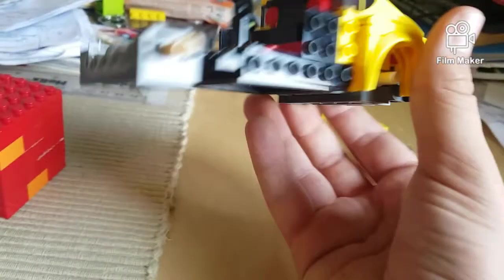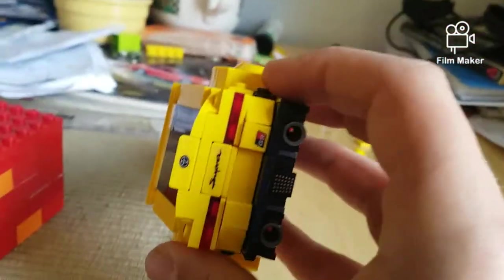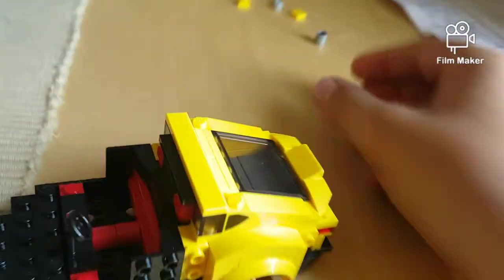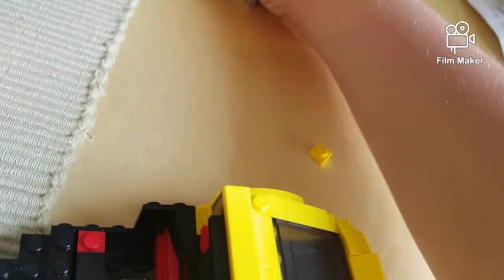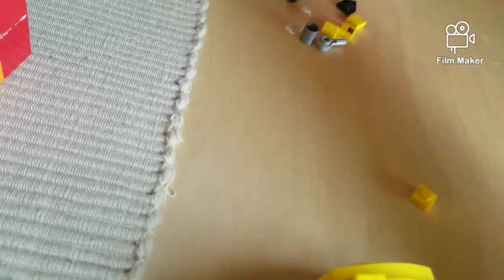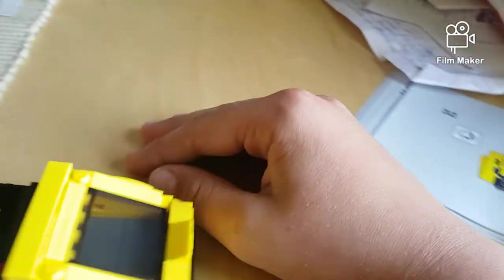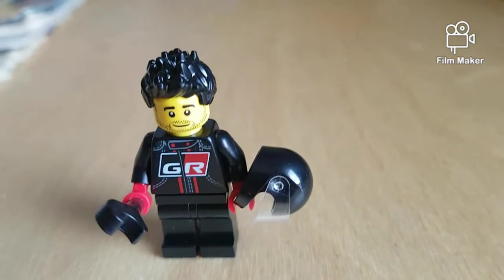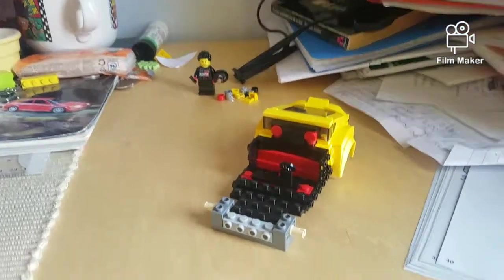So we're at the end of building bag one. We've got the rear of the Supra all done up nicely. We've got some spare studs here, and we have our GR Supra racing driver. Then guys, let's get into bag two.